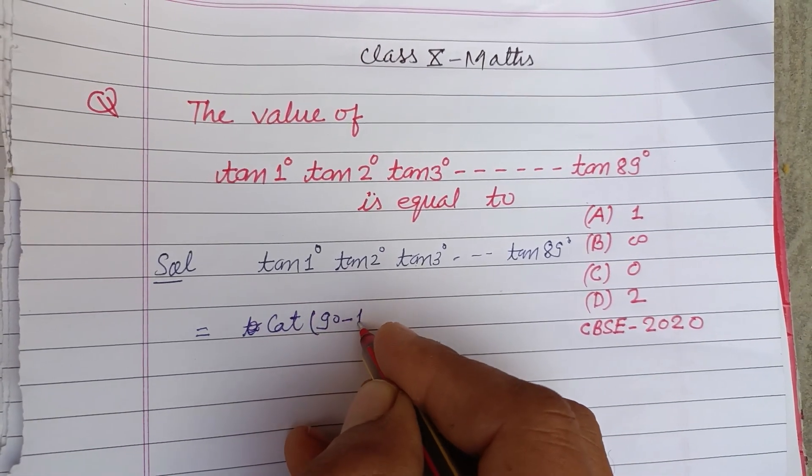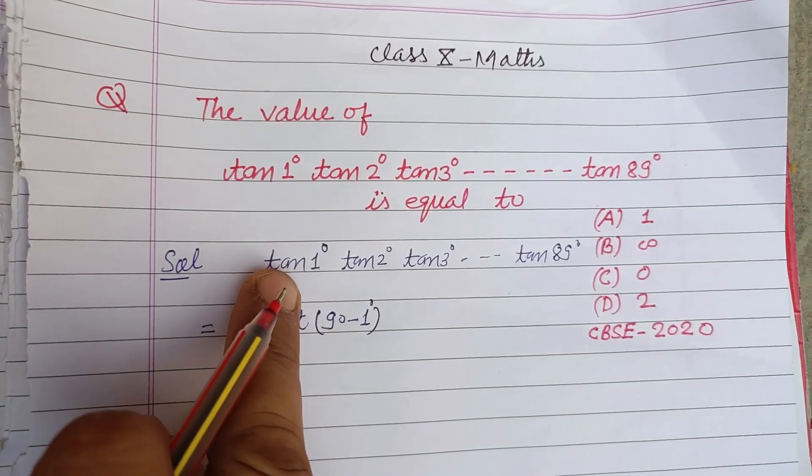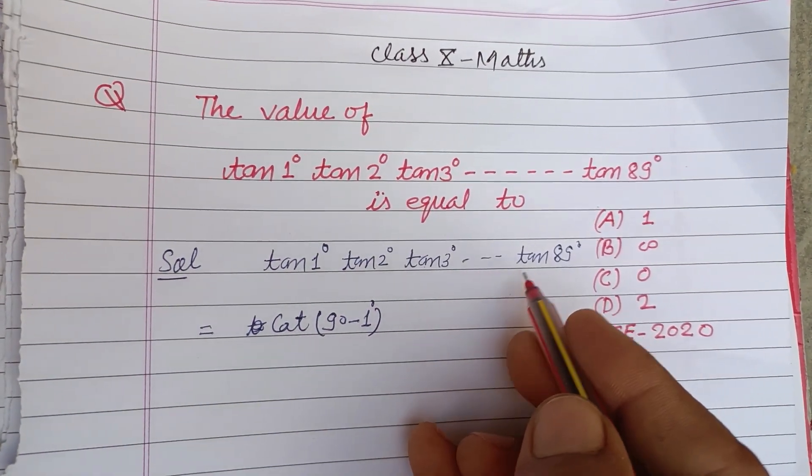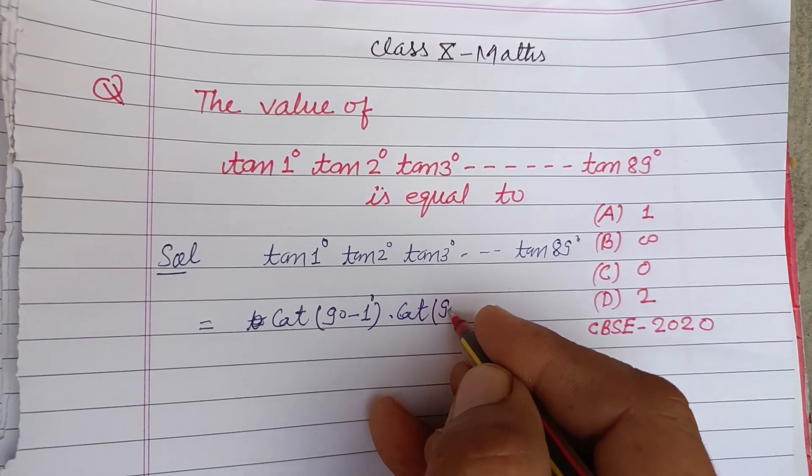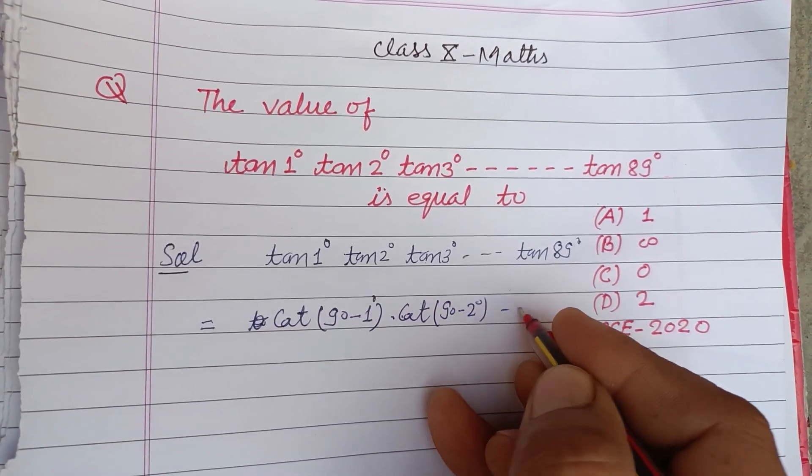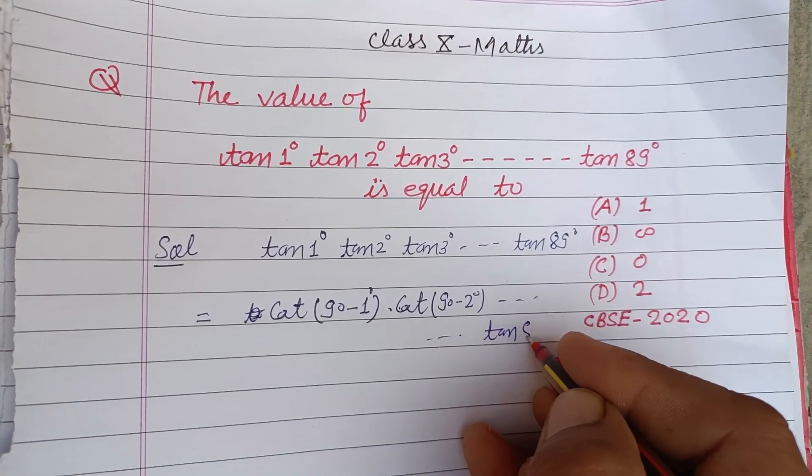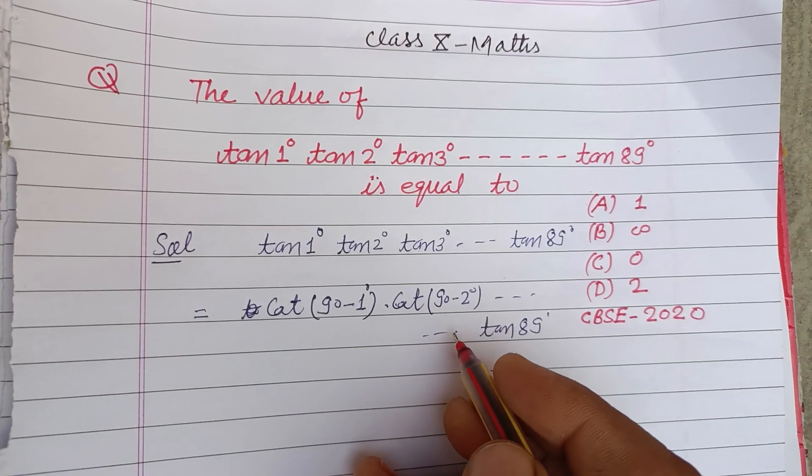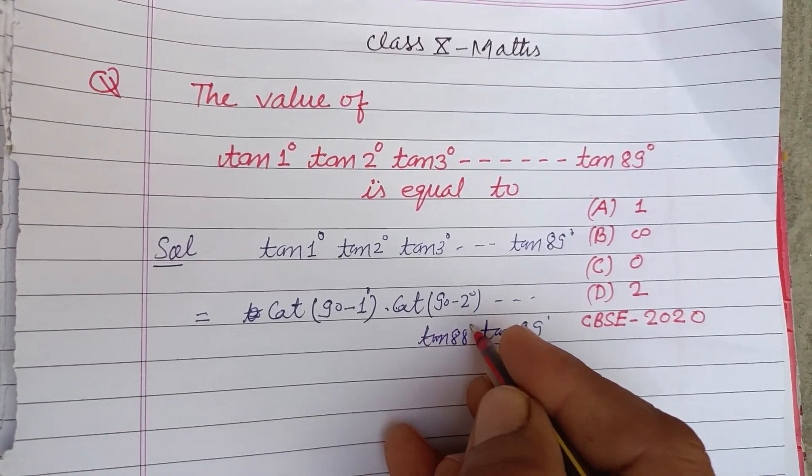(90° - 1°). Since cot(90° - θ) equals tan θ, tan2° can be written as cot(90° - 2°) and so on. This is tan89° and tan88° is also available here.